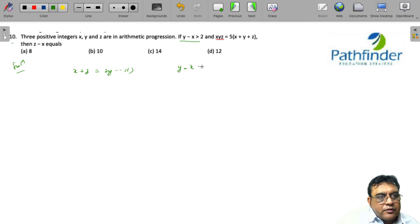You are also given that xyz equals 5 times (x plus y plus z). We need to find z minus x. Since x plus z equals 2y, I can write: xyz equals 5 times (2y plus y), which means xyz equals 15y.